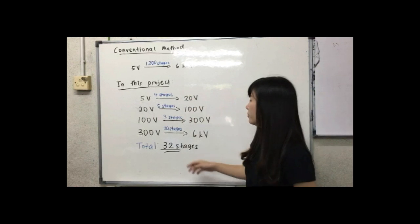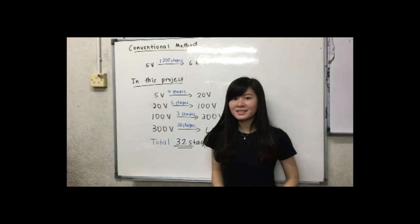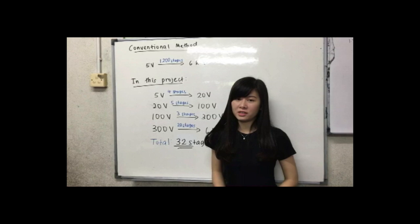The fourth level will be 20 stages to obtain 6kV. Using this technique is more feasible to integrate high voltage supply with other associated circuits on a single chip.